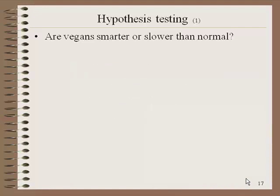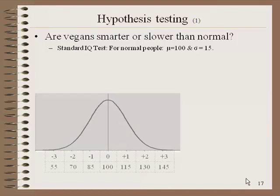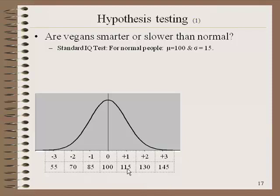So how can we apply hypothesis testing to Z-scores? Let's imagine a question: are vegans smarter or slower than normal? Imagine we have data on a standard IQ test, and on this test we know that normal people score 100 with a standard deviation of 15. If we were to represent that graphically, you would have the distribution with 100 in the center, then 115 and 130 — so mu equals 100 and standard deviation equals 15.